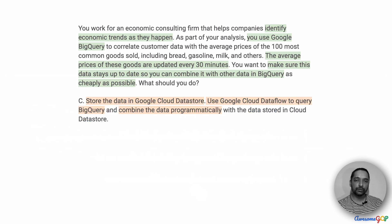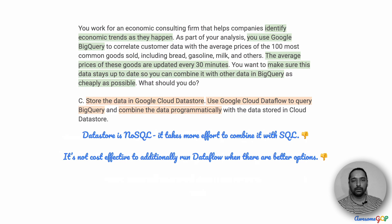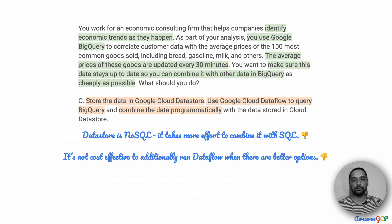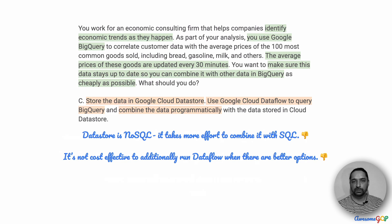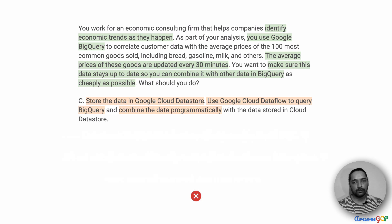Option C suggests storing the data in Google Cloud Datastore, then using Cloud Dataflow to query BigQuery and combine the data programmatically with data stored in Cloud Datastore. Datastore is a NoSQL storage and would take more effort — requiring additional coding and management through Dataflow before we can query it efficiently. BigQuery is the fastest for analytics, and if you're bypassing it unnecessarily, you're probably not making the right choice. Since we already have a better option, Option C does not work and we eliminate it.